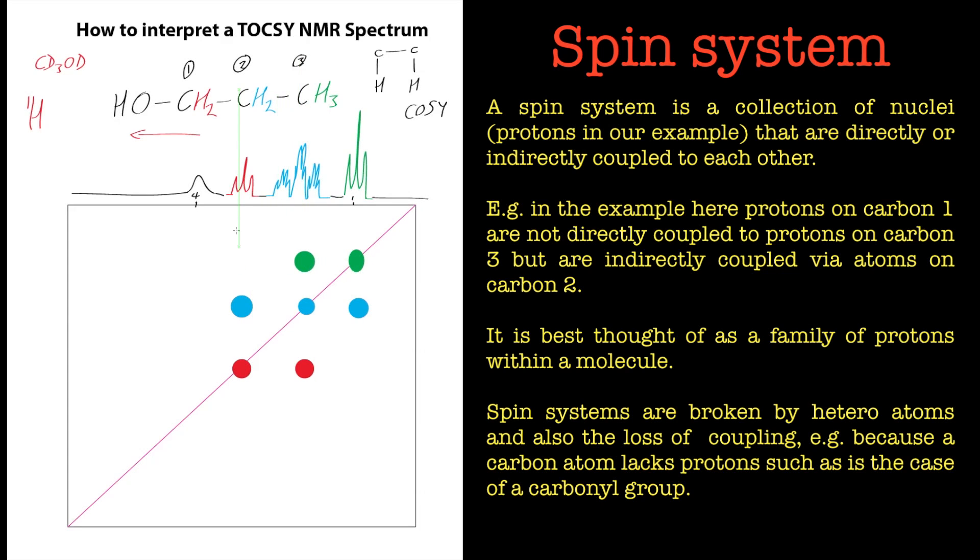And it gets weaker the further away it is. So if we had a longer chained hydrocarbon there, it would probably only go about four or five carbon lengths. So the TOCSY is not that good in terms of picking everything up and that kind of information can be quite useful as well.